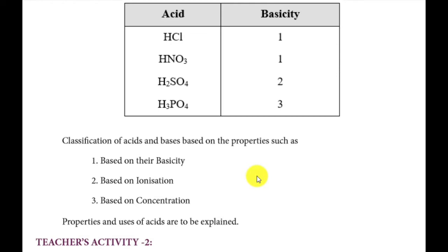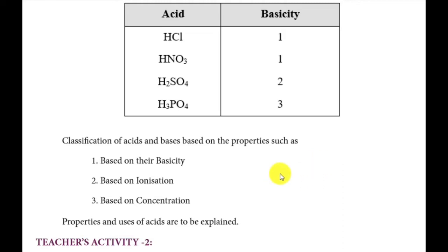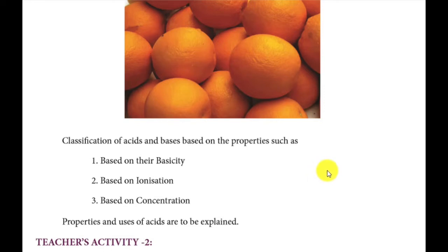Now looking at the base classification. For bases, we classify by the number of replaceable hydroxyl ions. Monoacidic base has one hydroxyl ion. Example: sodium hydroxide, NaOH. Diacidic base has two replaceable hydroxyl ions. Example: calcium hydroxide, Ca(OH)2. Triacidic base has three replaceable hydroxyl ions. Example: Fe(OH)3. This is the basicity and acidity classification.